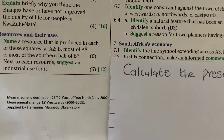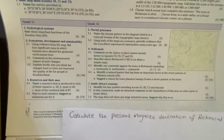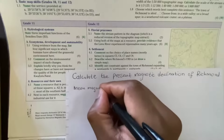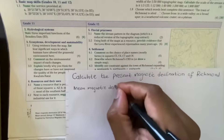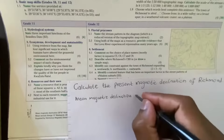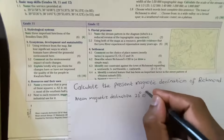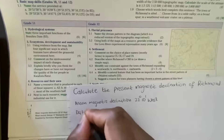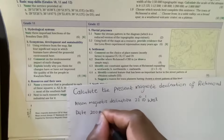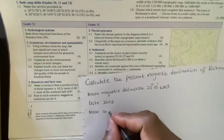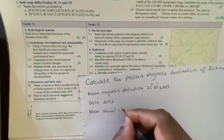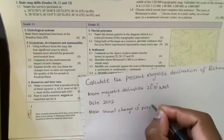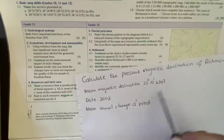As supplied by the Hermanus Magnetic Observatory. Let me write this information down. The mean magnetic declination is 23 degrees 10 minutes west of true north, with the date July 2002. The mean annual change is 12 minutes west. You need to note that both directions are west.